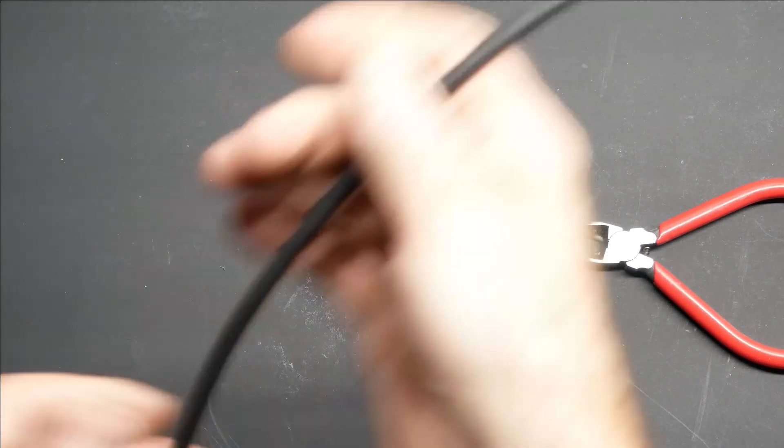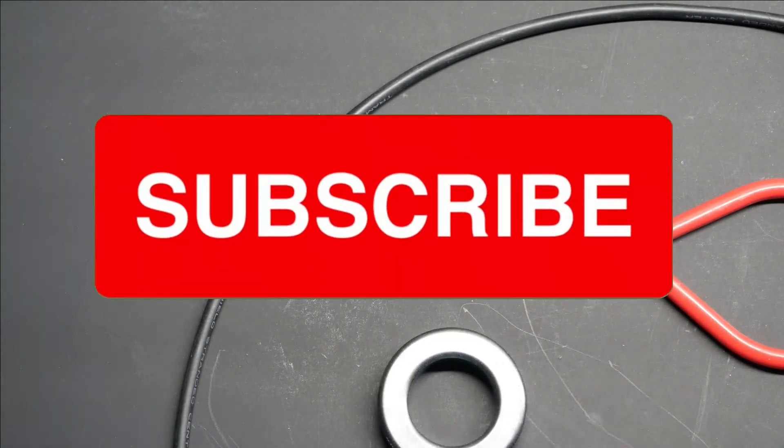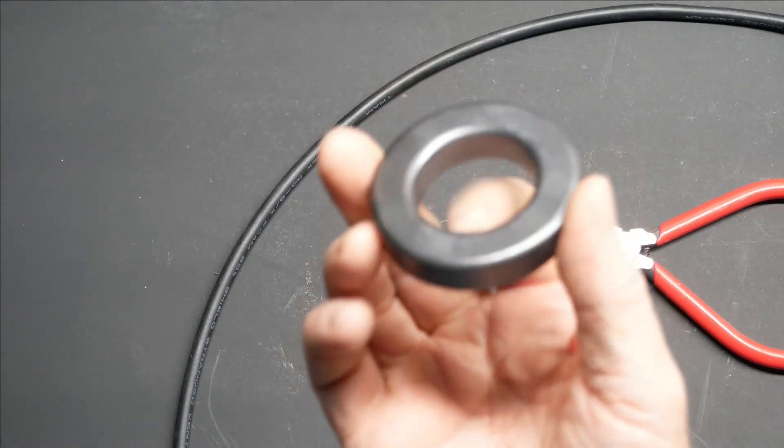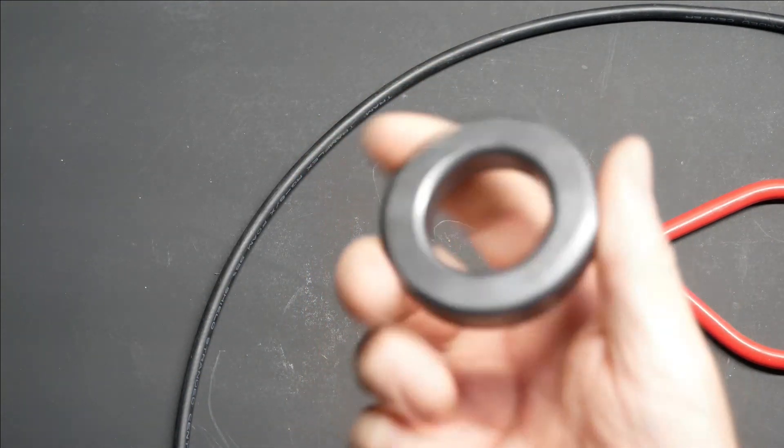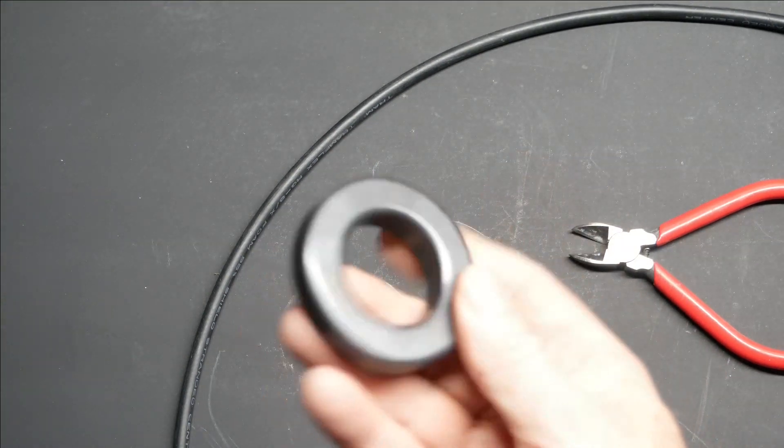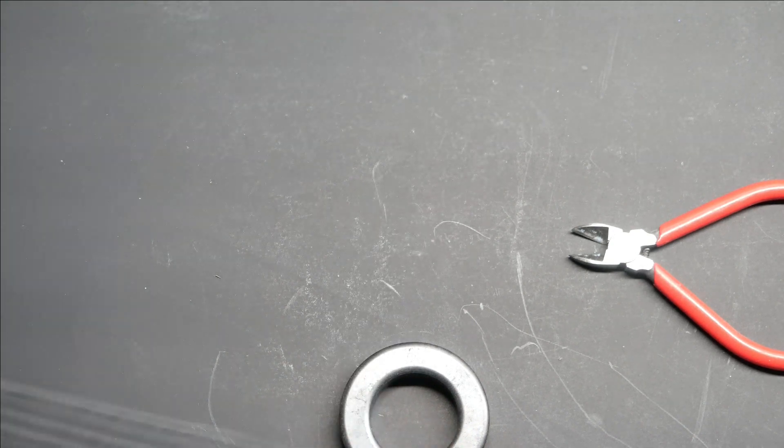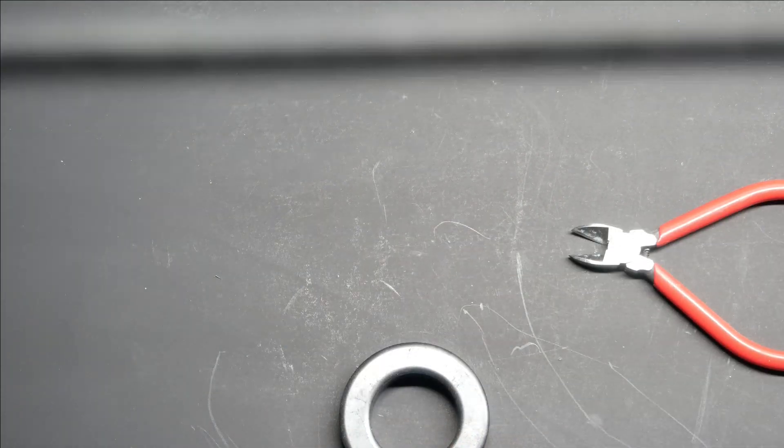This is just a quick tutorial on how to build a common-mode choke out of a FT240-43 toroid and a piece of coax. So this is RG8X.